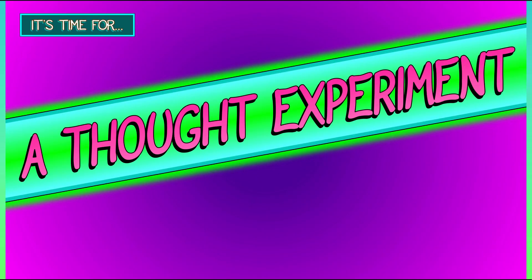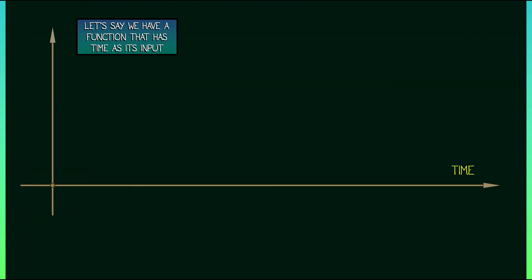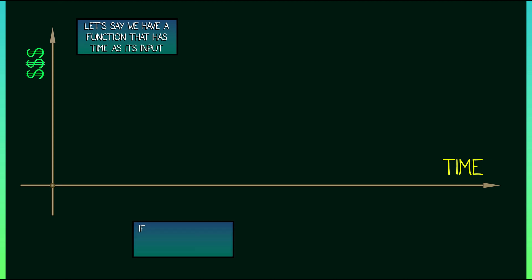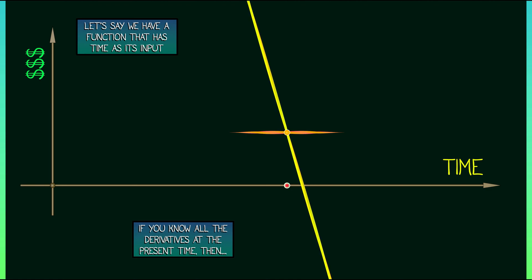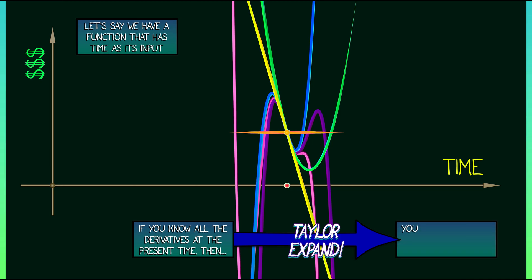Let's do a thought experiment. Perhaps this central insight could be useful — maybe we can conquer the world. Let's say we have a function that has time as its input, maybe something like a stock market index. If we know the value of the function right now, and we know the value of its first derivative, second derivative, third derivative, and more derivatives right now, then all we need to do is use that Taylor expansion formula about the present, and we can predict the future with perfect accuracy.